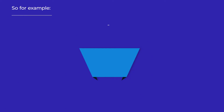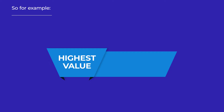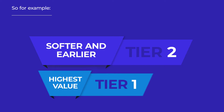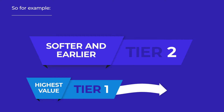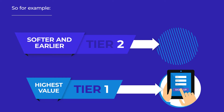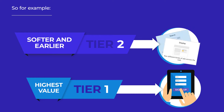For example, you might group your highest value main conversions into a conversion action set and call it tier one. You might group softer, earlier-journey conversions into another set called tier two. You could then assign tier one to campaigns targeting people ready to sign up, and tier two to campaigns targeting people earlier in the customer conversion journey, such as generic search campaigns or display. The result should drive more of the right type of conversions at the right stage of the journey and give you a competitive advantage against others who are yet to implement this feature.